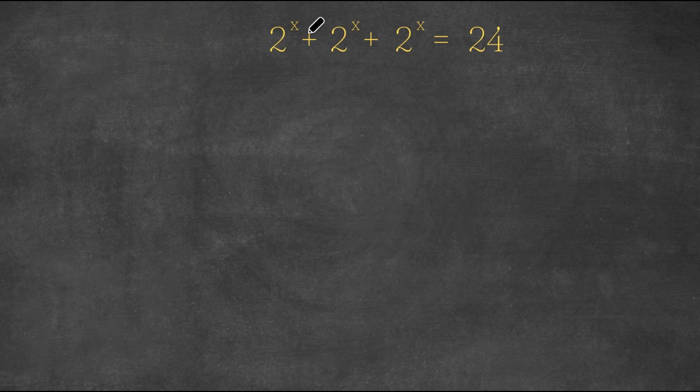So we have 2 to the power of x plus 2 to the power of x plus 2 to the power of x is equal to 24.